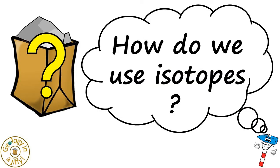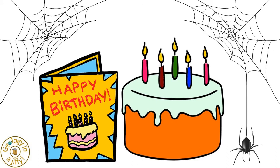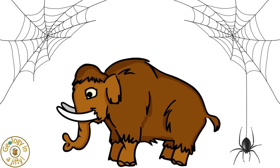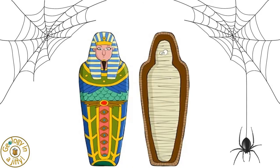How do we use isotopes? Geologists use isotopes to work out how old certain objects are such as mammoths from a few tens of thousands of years ago or mummies from ancient Egypt.